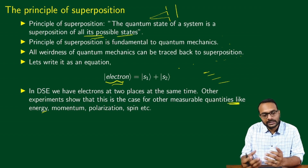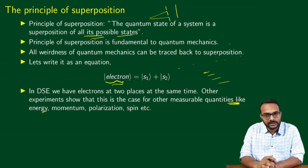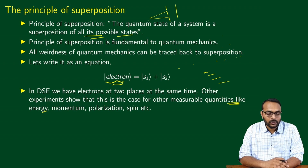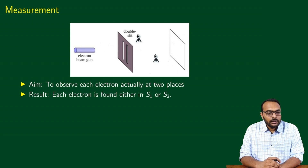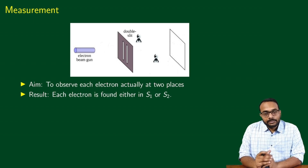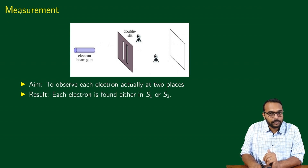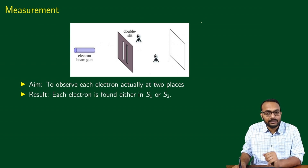All the weirdness of quantum mechanics can be traced back to superposition. Later on, we will look at another experiment which tells us basically the same thing. The principle of superposition simply is the fact that an electron can be at different places or different states at the same time. But that is not the only thing we need to worry about — there is another problem called the measurement problem.